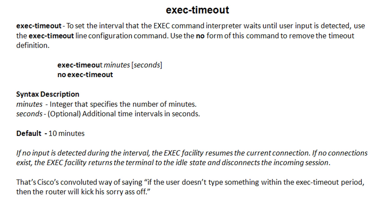The command structure is pretty easy. You go under your line — in this case line console 0 — then issue exec timeout with a hyphen. Make sure you include that. You set it in minutes and seconds; seconds is optional. So you could say exec timeout 3 for 3 minutes, or exec timeout 3 12 for 3 minutes and 12 seconds. We'll see a bit later that the seconds setting is a little goofy.